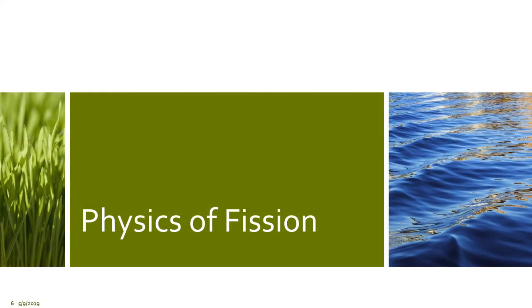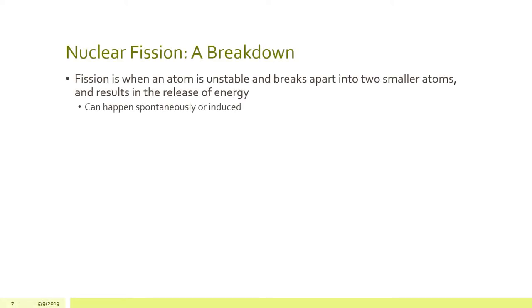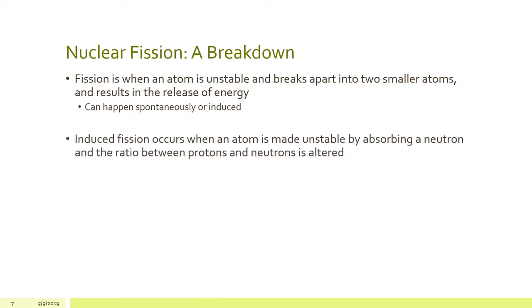This is a basic overview of the physics of fissile material. Fission is when an atom is unstable and breaks into two smaller atoms and results in the release of energy. This can happen spontaneously or induced. An induced fission occurs when an atom is made to be unstable by absorbing a neutron and the ratio between the protons and neutrons is altered and alters the stability of the nucleus.